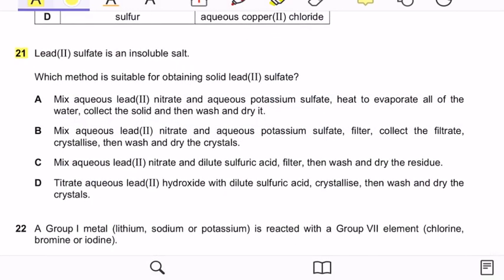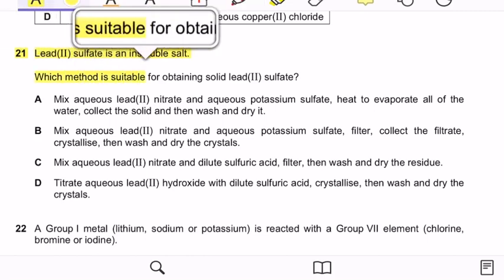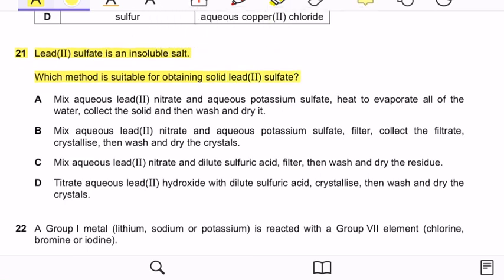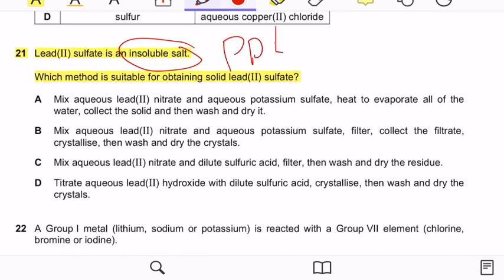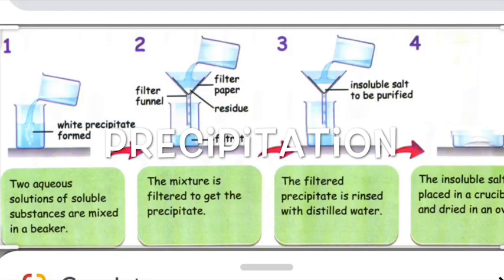Question 21: Lead sulfate is an insoluble salt. Which method is suitable for obtaining solid lead sulfate? Because the salt is insoluble (a precipitate), it is not obtained by crystallization. The correct method is: mix two aqueous solutions of soluble substances in a beaker, filter to get the precipitate, wash the filtered precipitate with distilled water, then dry the insoluble salt in an oven.